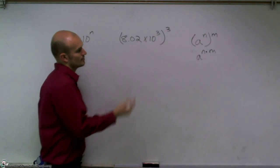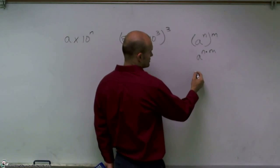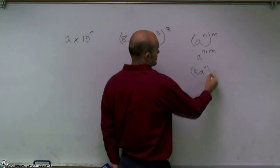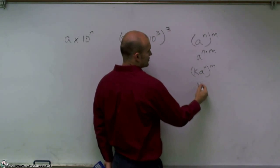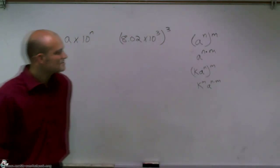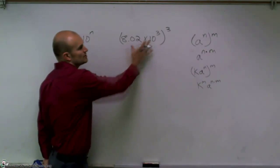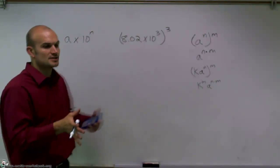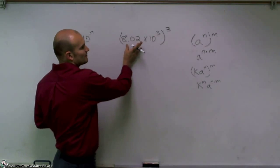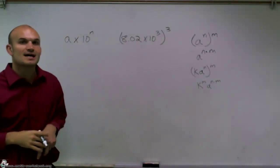So another thing that I should also tell you is if I had k times a to the n raised to the m, that's also going to mean k to the m times a to the n times m. So that m is going to distribute to both of them. And we're going to use that for our scientific notation because when we multiply and divide, we multiply and divide the first two terms, and then we do the times 10 separately.